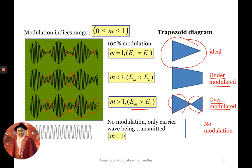When the trapezoid diagram appears as a straight line, this means the AM signal has not gone through any modulation — only the carrier wave has been transmitted. The modulation index should be zero because no modulation process has been done.